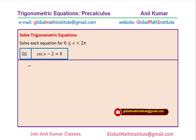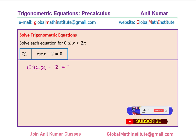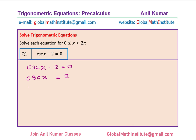Question number 1 is cosecant x minus 2 equals 0. Rearranging, we get cosecant x equals 2. Cosecant is the reciprocal of sine, so therefore sine x should equal 1 over 2. We are looking in the domain 0 to 2 pi, so I am expecting two solutions. One in quadrant 1 and the other in quadrant 2.